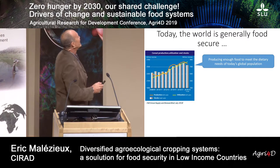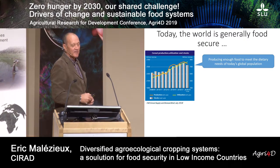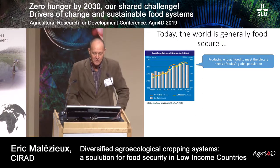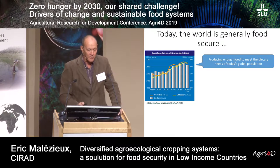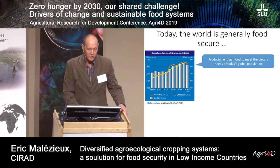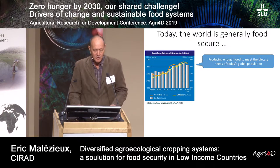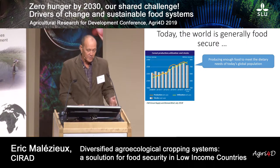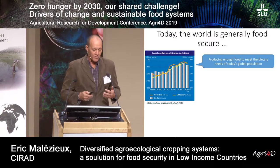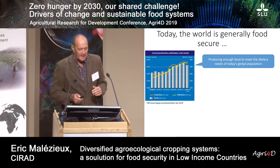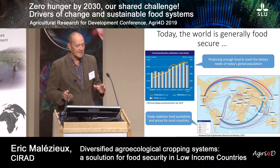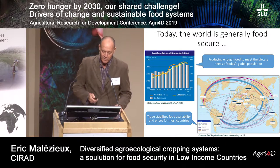Today many people consider that the world is generally food secure and that we are producing enough food to meet the dietary needs of today's global population. As you can see on the graph, the orange line represents production and the yellow line represents consumption and needs. When they differ, you can see that the stocks, shown as grey bars, are adapting. And in addition, global trade at the global scale stabilizes food availability and prices for most countries.